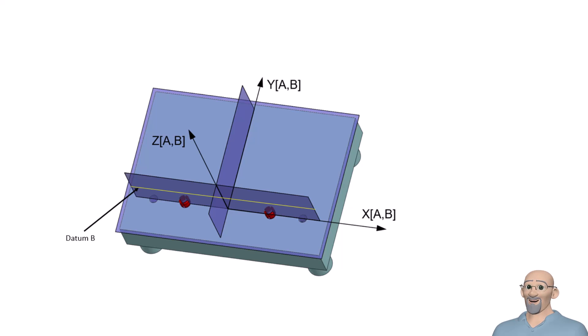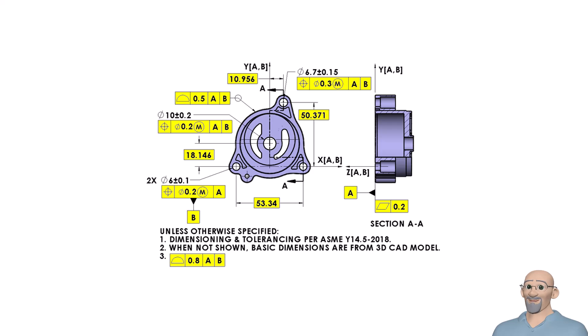For our example part, this means datum B, the line on a plane, will be constrained to be perpendicular to datum plane A. Here we have figure 4A, which is a part we call housing. This part has a pattern of two parallel cylindrical holes that are six millimeters in diameter. We are using these holes to establish datum feature B.